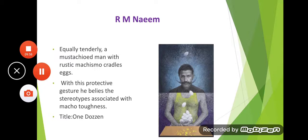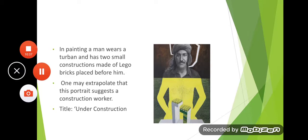Society expects men to be hard, to lead the family emotionally and financially. The artist critiques this — it is not necessary that every man must be that strong or follow that framework. Some male members can think differently; some are emotionally softer, and it is not necessary for a person to make themselves rigid and strictly bound to those rules and ideas. In another painting, a man wears a turban with small constructions of bricks placed before him, titled 'Under Construction.'